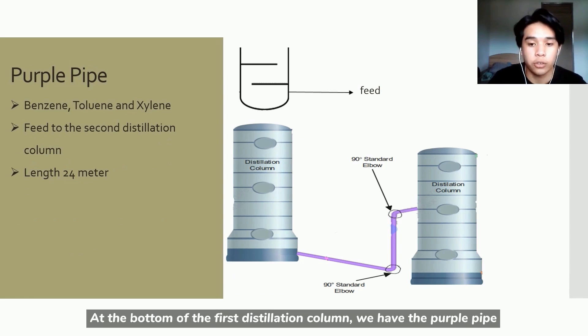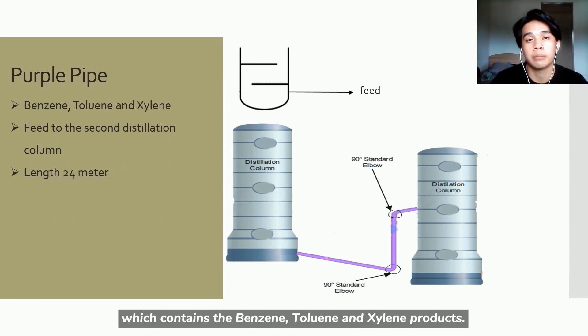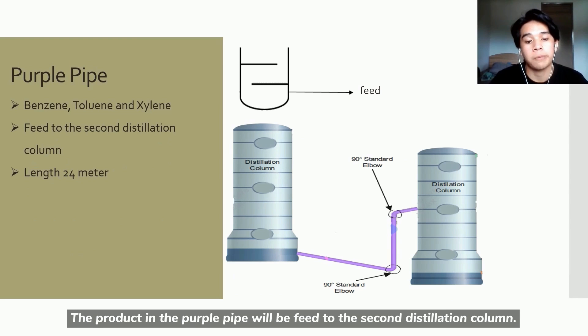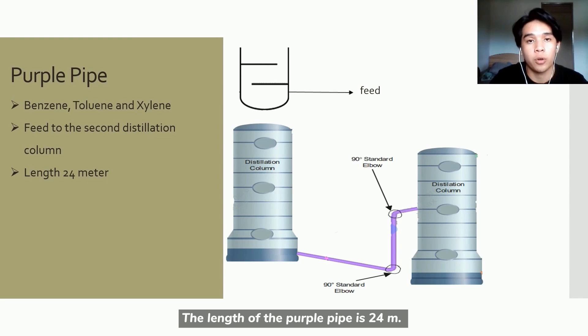At the bottom of the first distillation column, we have the purple pipe which contains benzene, toluene, and xylene product. The product in the purple pipe will be fed to the second distillation column. The length of the purple pipe was 24 meters.